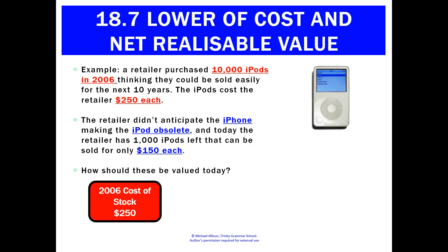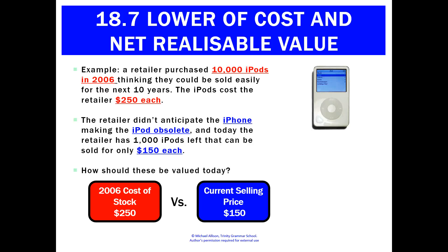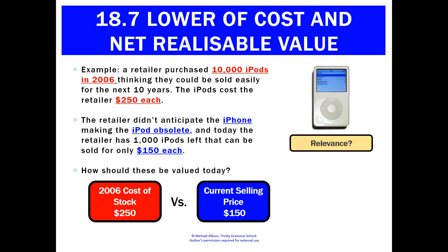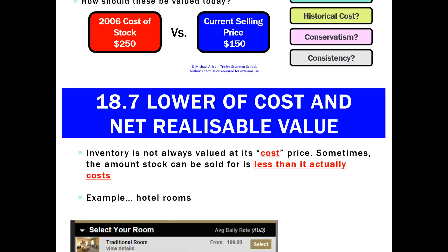So which value should we use today to value these iPods — the 2006 cost of $250 or the current selling price of $150? Different theories say different things. Historical cost and reliability would say use the original price of $250 — we've got proof of that one. But relevance would say use $150, as it's more relevant to decision making. Conservatism says always use the one that impacts the business negatively — the lowest — so we'd pick $150. Let's see if we can structure this and have a formula, because depending on which theory, it'll depend.